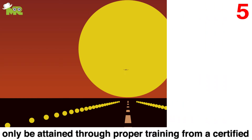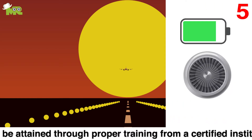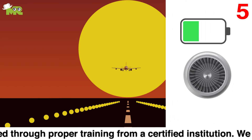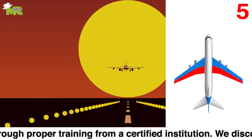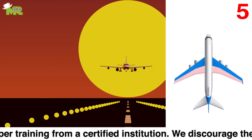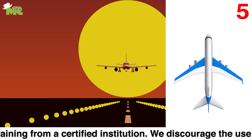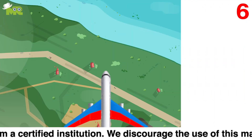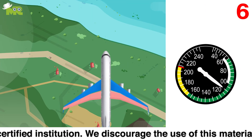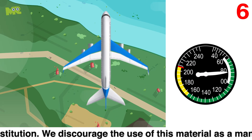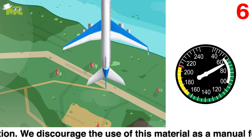Fifth, slowly reduce the power and lower the flaps, but make sure you don't deploy flaps at excessively high speeds. Six, only deploy the flaps when airspeed is within the white arc of the airspeed instrument.